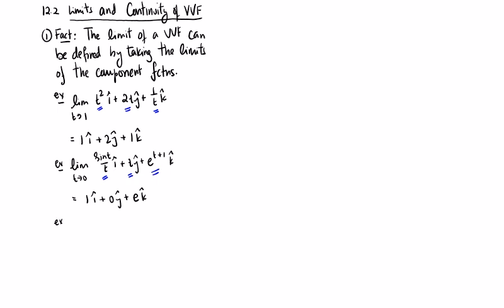And of course, in order for the limit of the vector-valued function to exist, all three have to exist. So if we had something like the limit as t goes to 0 of 1 over ti plus t cubed j minus tk,